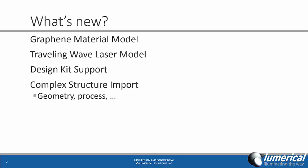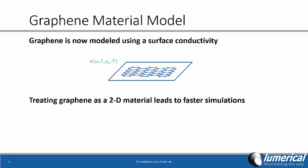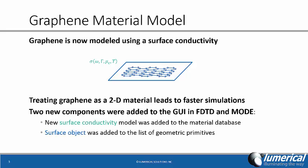Including geometry and process data. The new graphene material model now uses a surface conductivity. Treating graphene as a 2D material leads to faster simulations than the previous volumetric approach. Two new components have been added into the graphical interfaces of FDTD and MODE: the surface conductivity material model and a new 2D surface object.